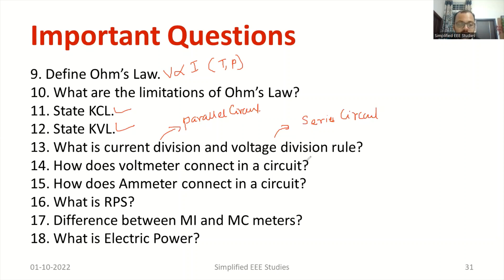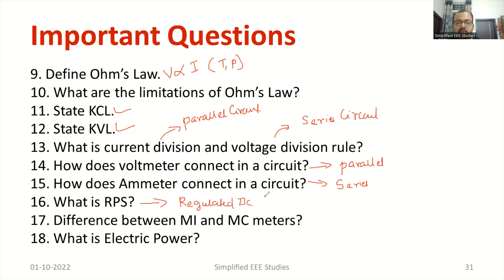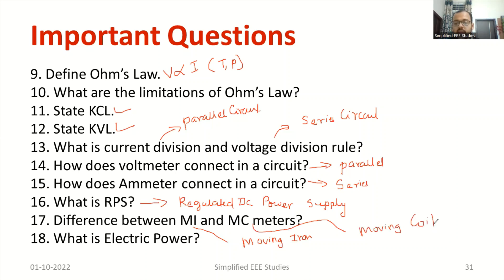How does a voltmeter connect in a circuit? Voltmeter always connects in parallel, also called shunt. What about ammeter? Ammeter always connects in series. What do you mean by RPS? RPS is nothing but Regulated DC Power Supply — please make a note of this. Difference between moving MI and MC: MI means moving iron type, applicable for AC measurement; MC means moving coil, applicable for DC measurement. These points you have to remember as people often get confused.